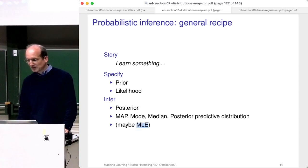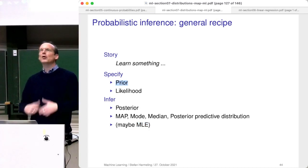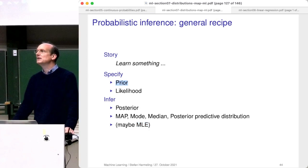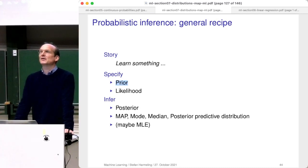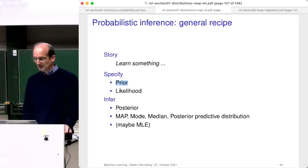Sometimes we want to do maximum likelihood because we don't want to specify a prior, or maybe the posterior involves a super-complicated integration which we cannot do — we'd need to sample or use approximation methods we don't trust. So there are also good reasons sometimes not to use Bayesian inference. But in principle, if we could do all these integrations, that would be the way to go.